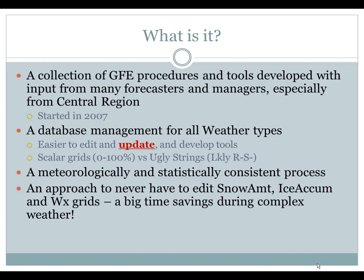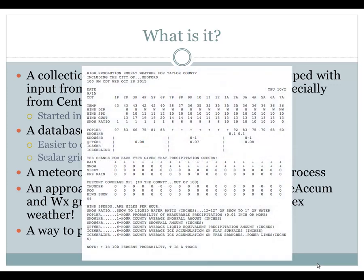It's also a meteorologically and statistically consistent process, so you're not going to be seeing freezing rain at 36 or 37 degrees, for example — your QPF, snow, and types will all match up. Regarding snow and ice, it's also an approach to never have to edit snow and ice accumulation and weather grids, which can be a bear during complex weather. This will make it simpler for you. It also provides additional DSS information — here in La Crosse we have an experimental product going out that contains not just temperature, wind speed, and direction, but also precipitation type probabilities for rain, snow, sleet, and freezing rain, as well as non-precipitating types like thunder, fog, and blowing snow. This could be good for core partners like road crews.